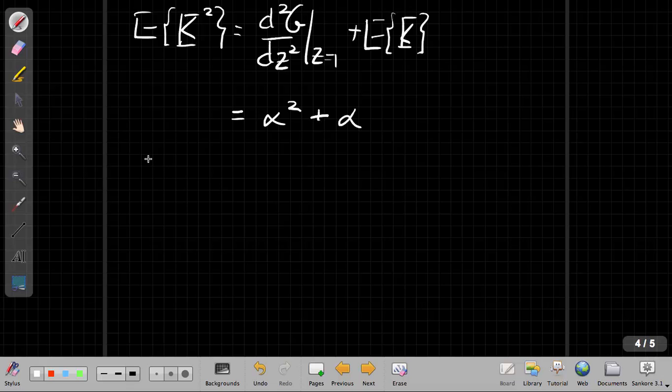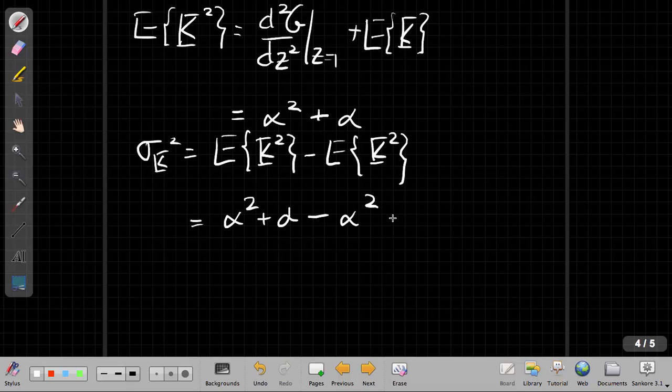Now if I wanted to find the variance of k, I'd say, well, I know the variance of k is the second moment. The easiest way to find it from here is the second moment minus the first moment squared. So I've just found the second moment is alpha squared plus alpha. The first moment was alpha and I square it.